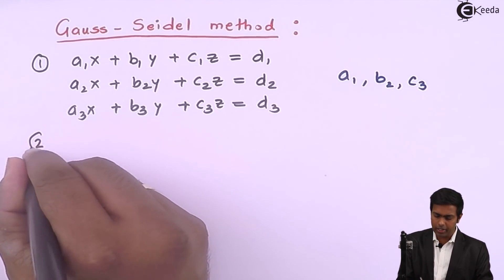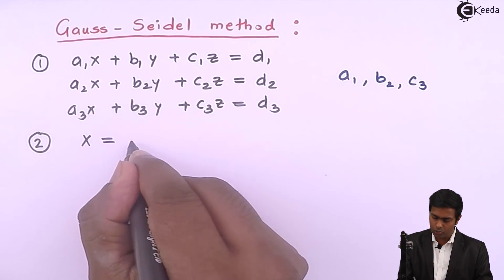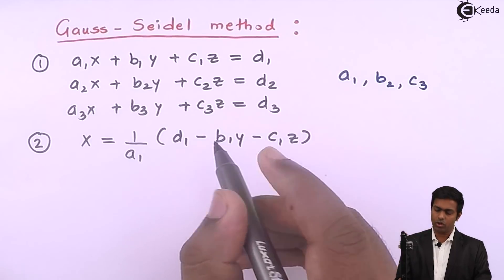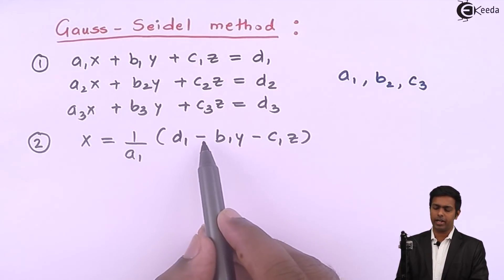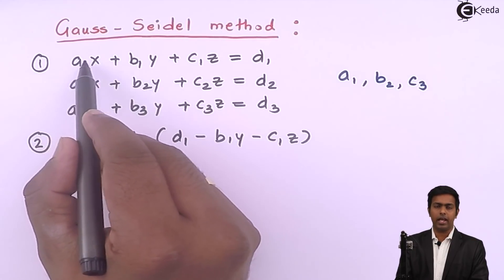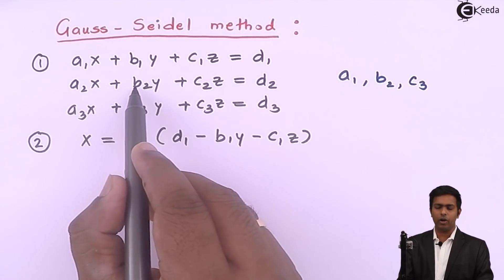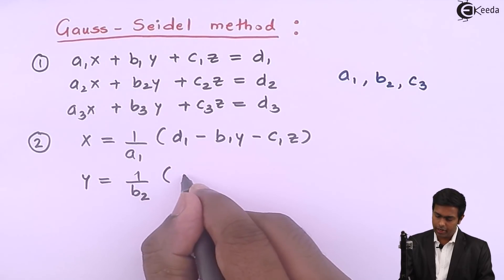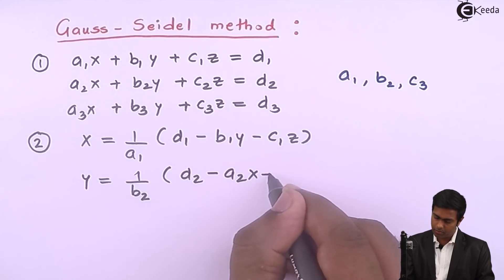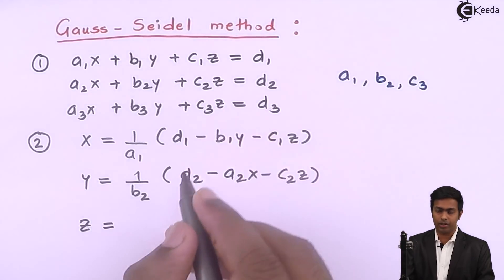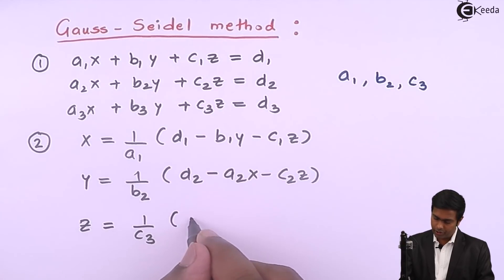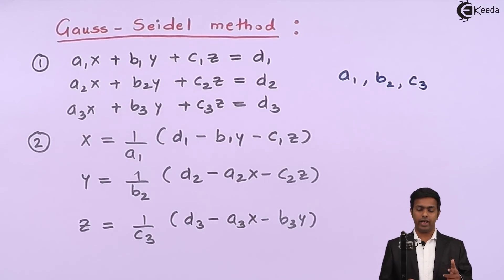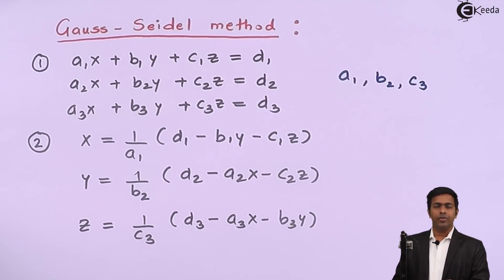The first equation is rearranged as x = (1/a1)(d1 − b1y − c1z). From the second equation: y = (1/b2)(d2 − a2x − c2z). And z = (1/c3)(d3 − a3x − b3y). This gives us expressions for x, y, and z that we will use in iteration.